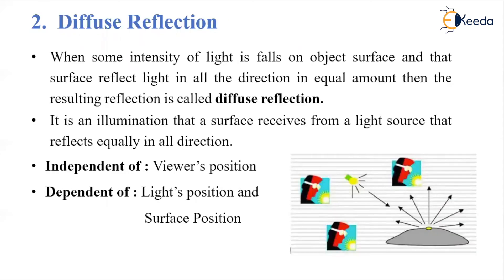Second is diffuse reflection. When some intensity of light falls on an object surface, that surface reflects light in all directions in equal amounts, and the resulting reflection is called diffuse reflection. Whenever the light falls, it is scattered all around in equal amounts. It is an illumination that a surface receives from a light source and reflects equally in all directions. It is independent of the viewer's position, but it depends upon the position of the light source and the position of the object surface.